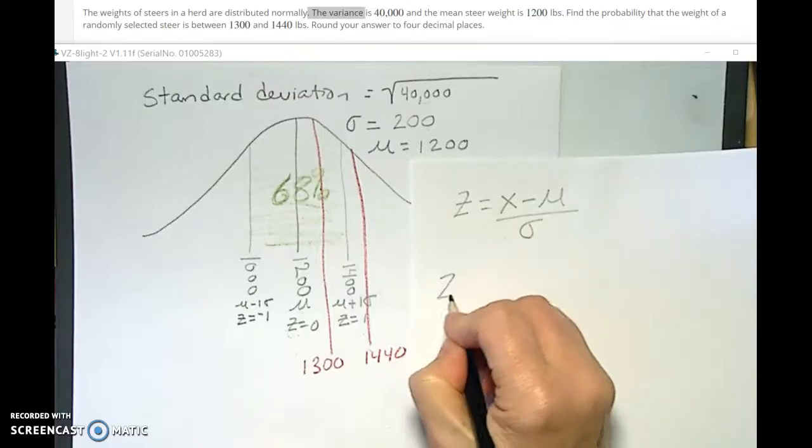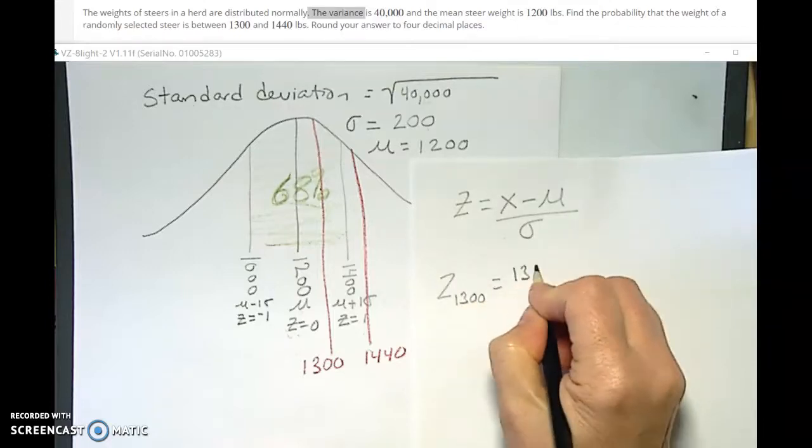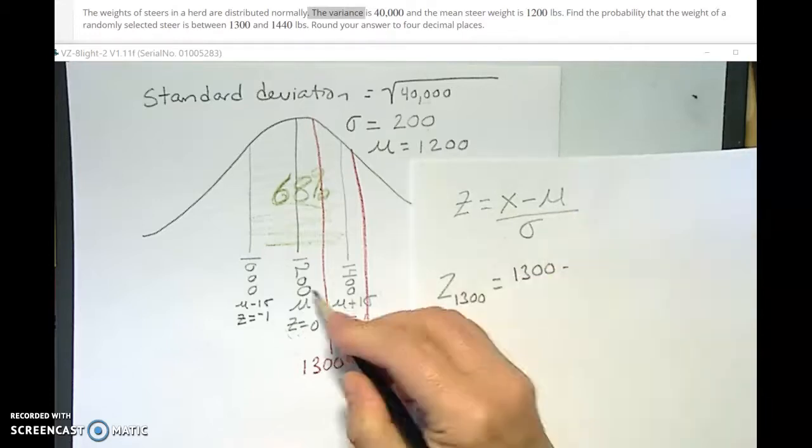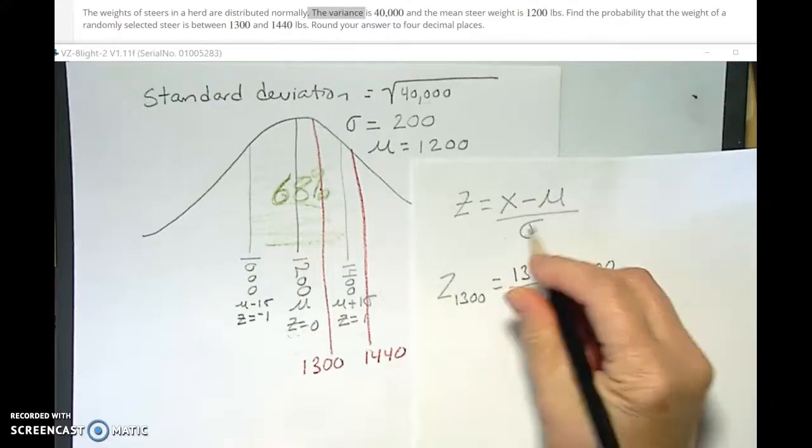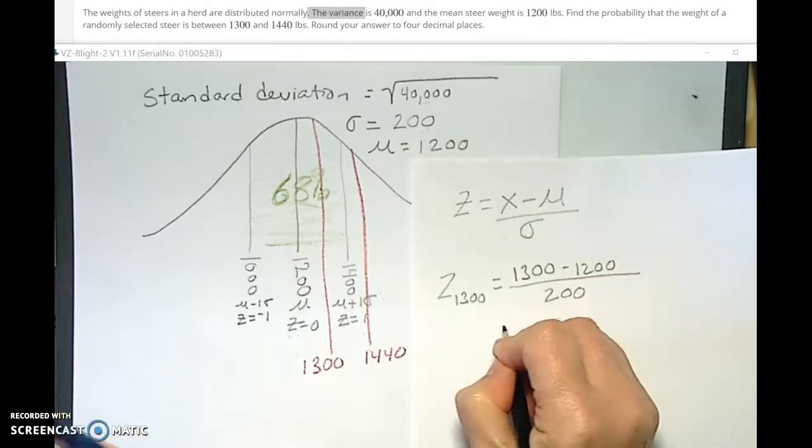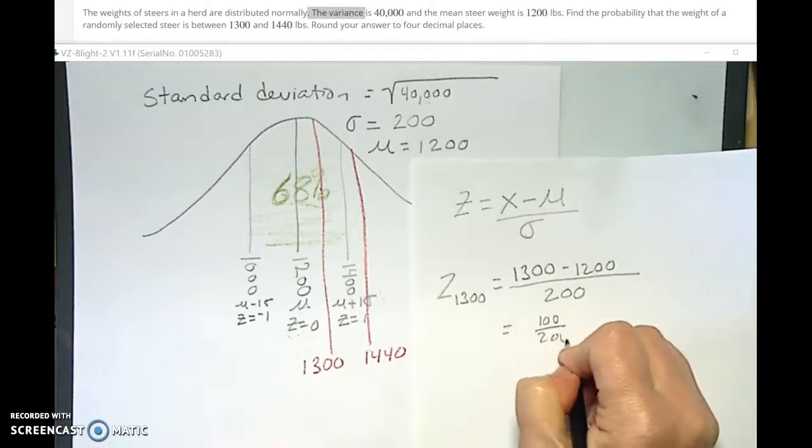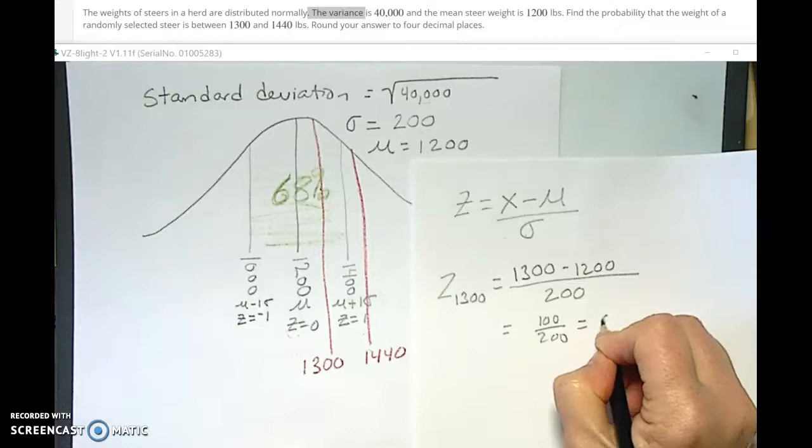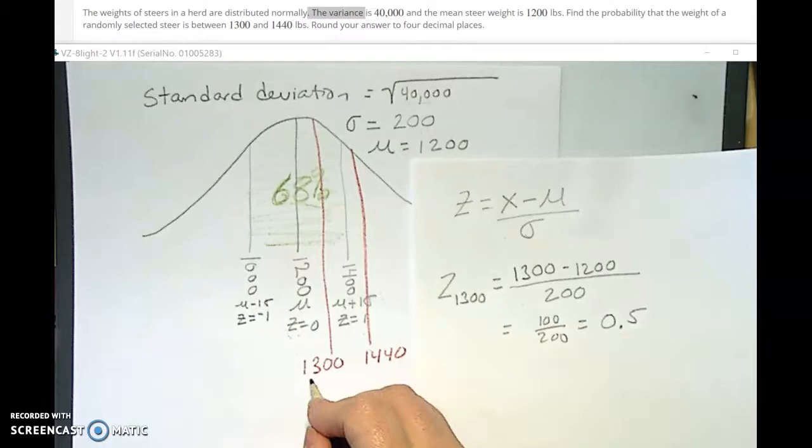The z-score is where you are minus the mean over the standard deviation. So the z-score for 1,300 is 1,300 minus the mean 1,200 over the standard deviation, which is 200, which is equal to 1,300 minus 1,200 is 100 over 200, which is equal to a half or 0.5, because almost everything here uses decimals. So that's our first z-score, z equals 0.5.